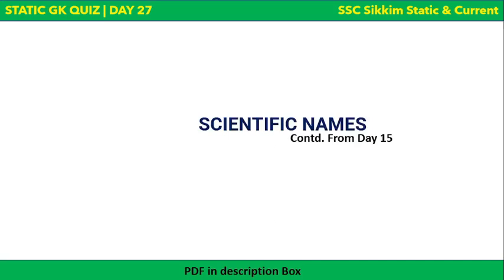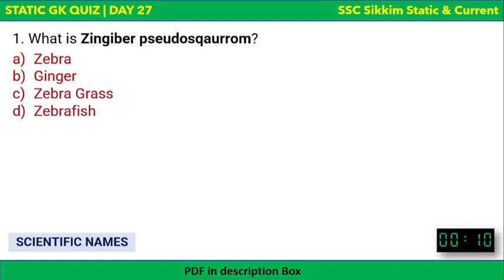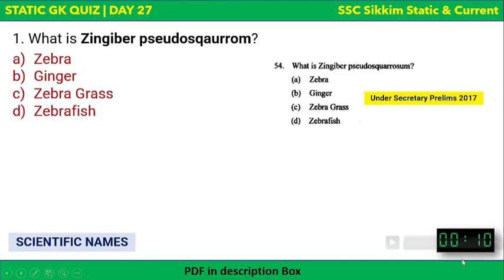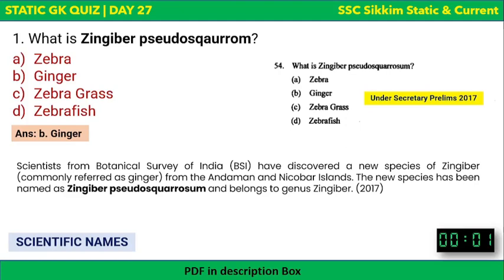Scientific names — it's a continuation from day 15. Let's proceed to the first question. What is Zingiber pseudoscarum? This question was asked in the Under Secretary exam in 2017. The options are: zebra, ginger, zebra grass, or zebra fish. The correct answer is: Zingiber pseudoscarum is ginger.